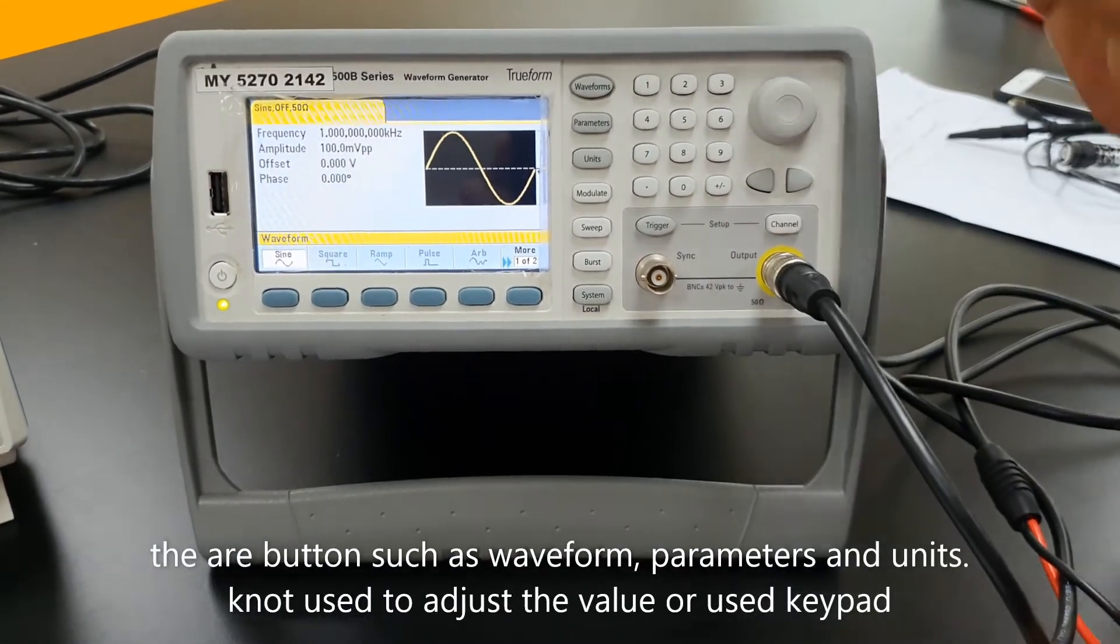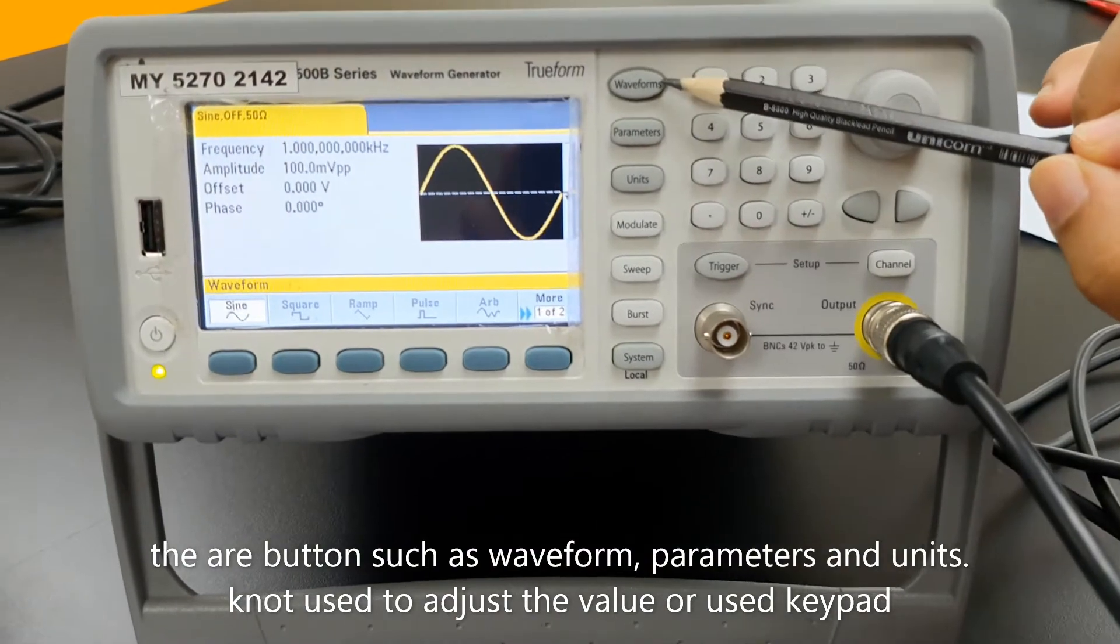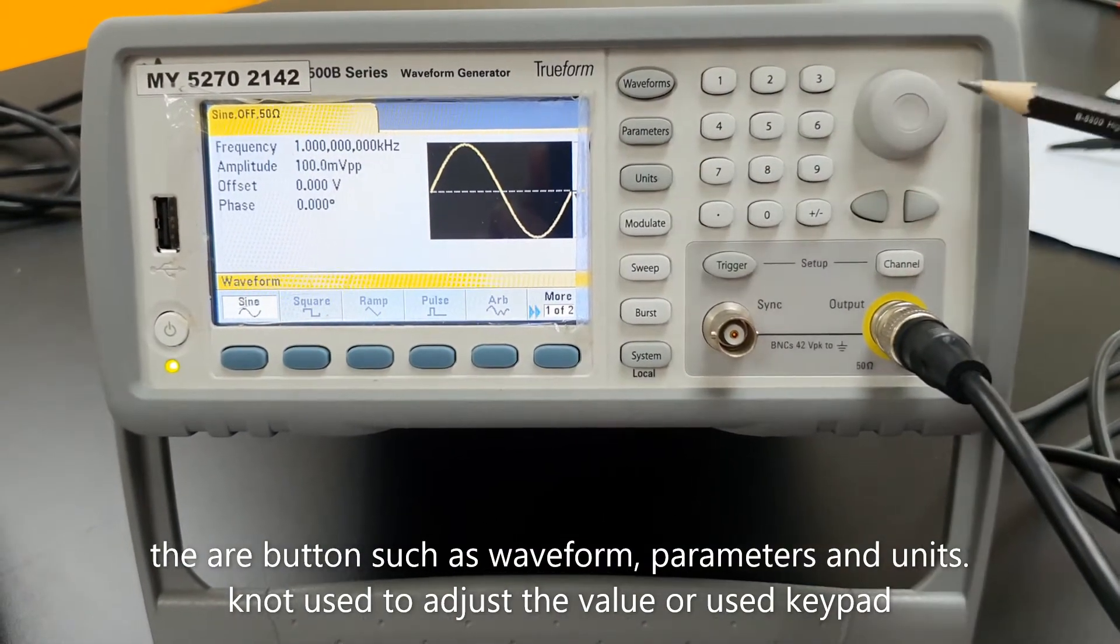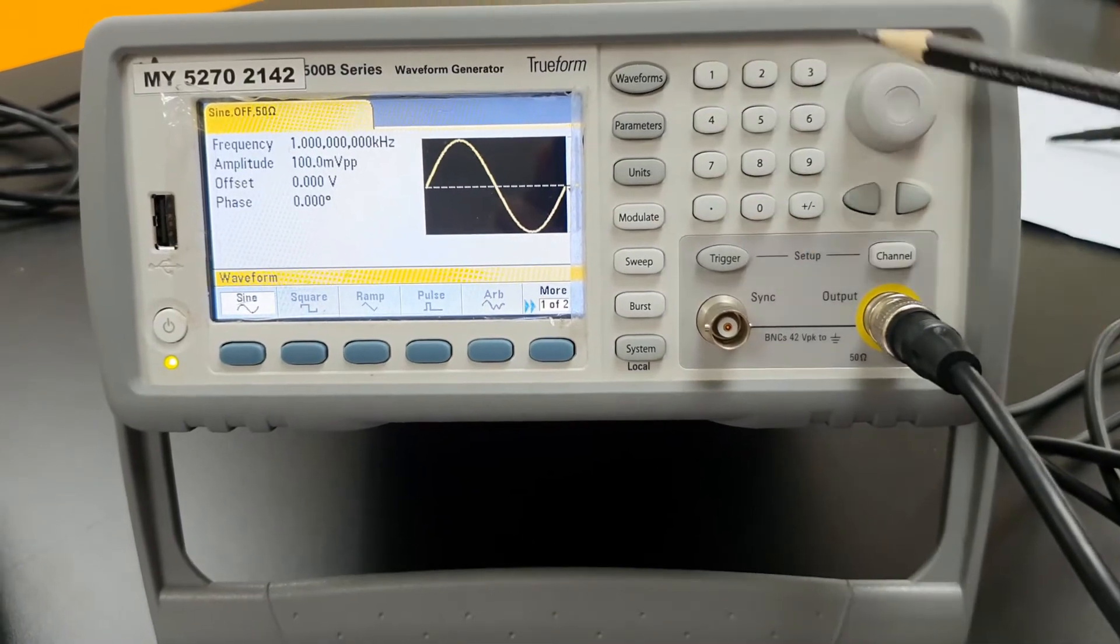There are buttons such as waveform, parameters, and units. Knob is used to adjust the value, or use the keypad.